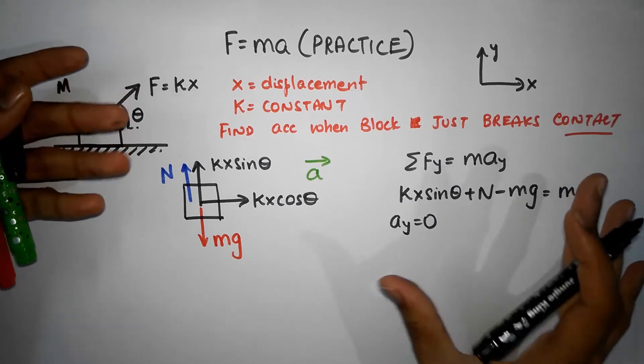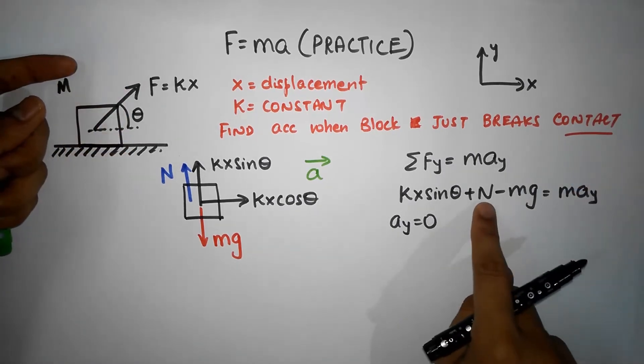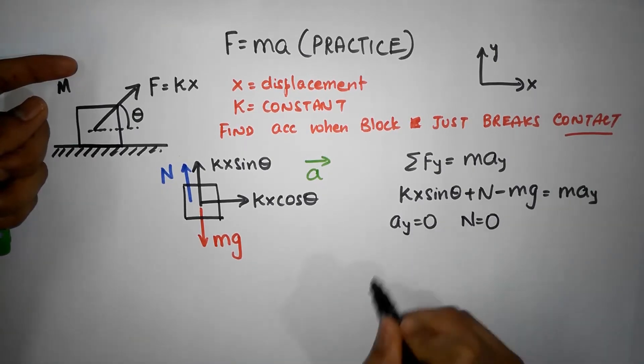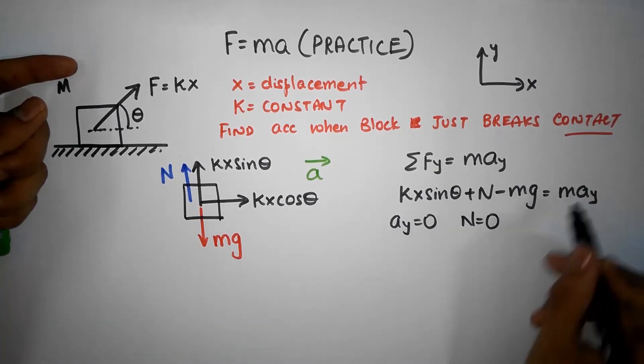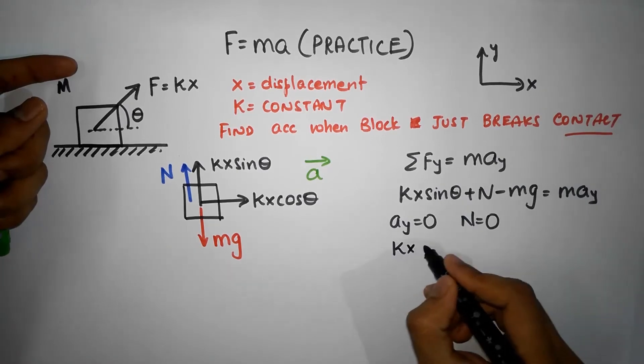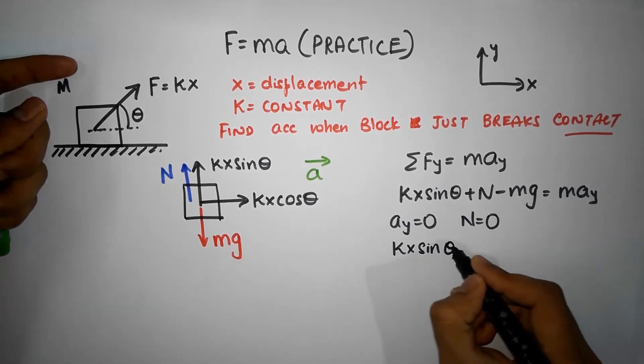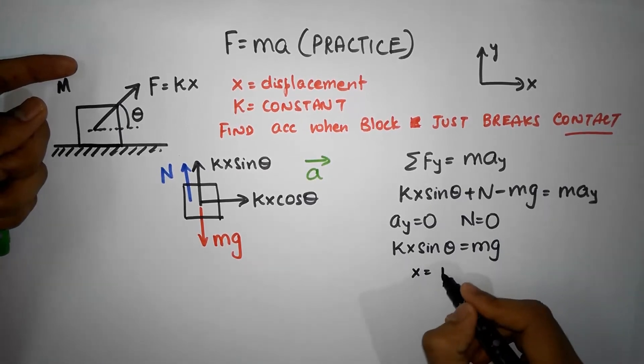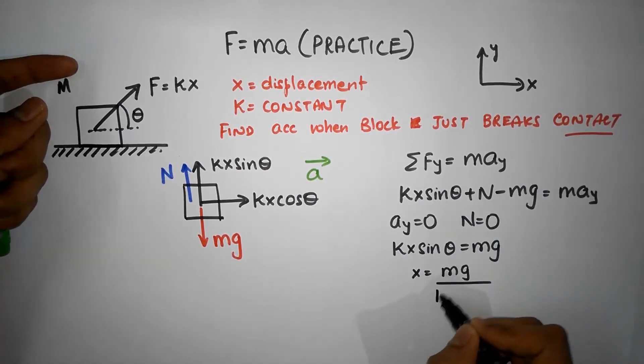But it has just broken contact, that means the normal force has also gone to zero. That's the meaning of just broken the contact. So you put normal force as zero, and you understand that kx sine theta should equal mg, or x should equal mg divided by k sine theta. That should be the x value.